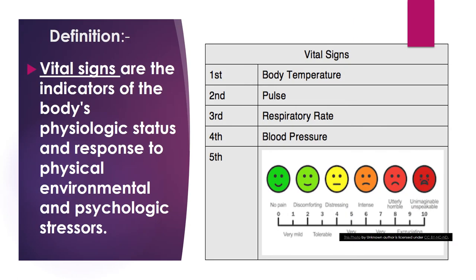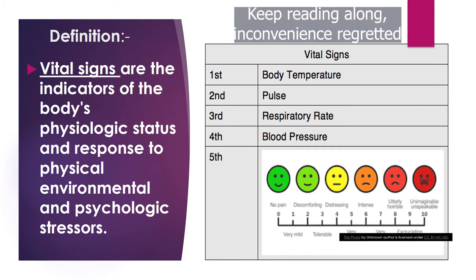Next, we will see the definition of vital signs. Vital signs are the indicators of the body's physiological status and response to physical environment and psychological stress. When our body experiences physiological, psychological, or environmental stress, the result is reflected through the body's vital signs.